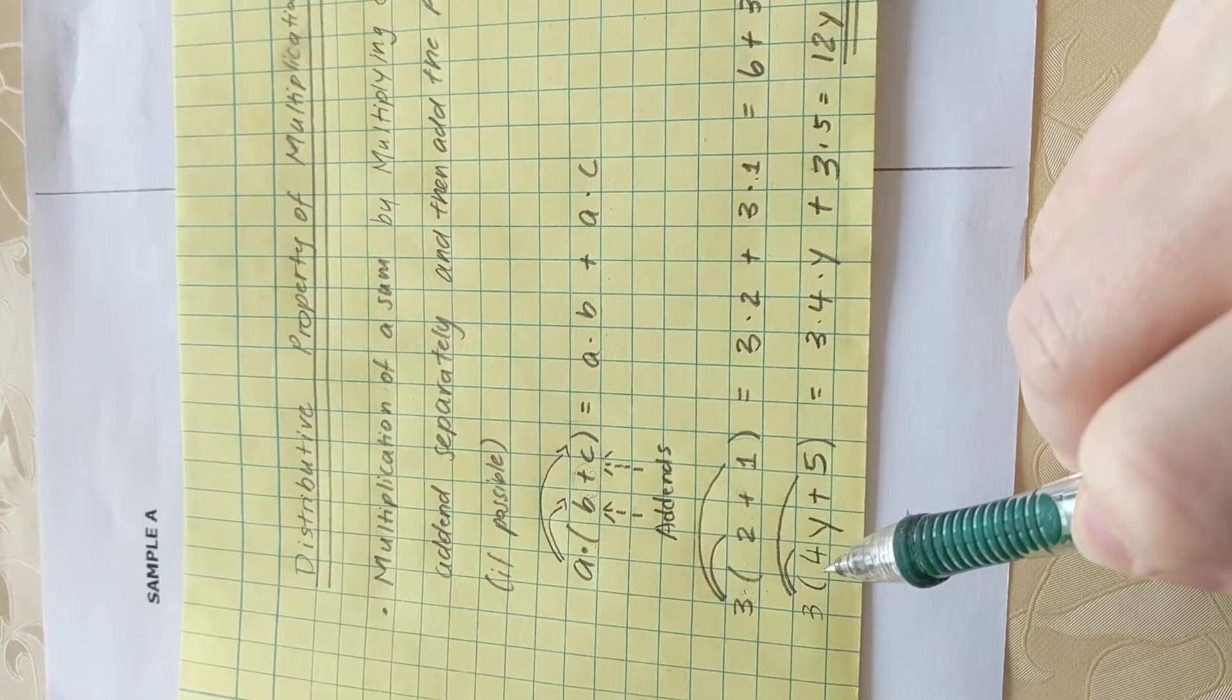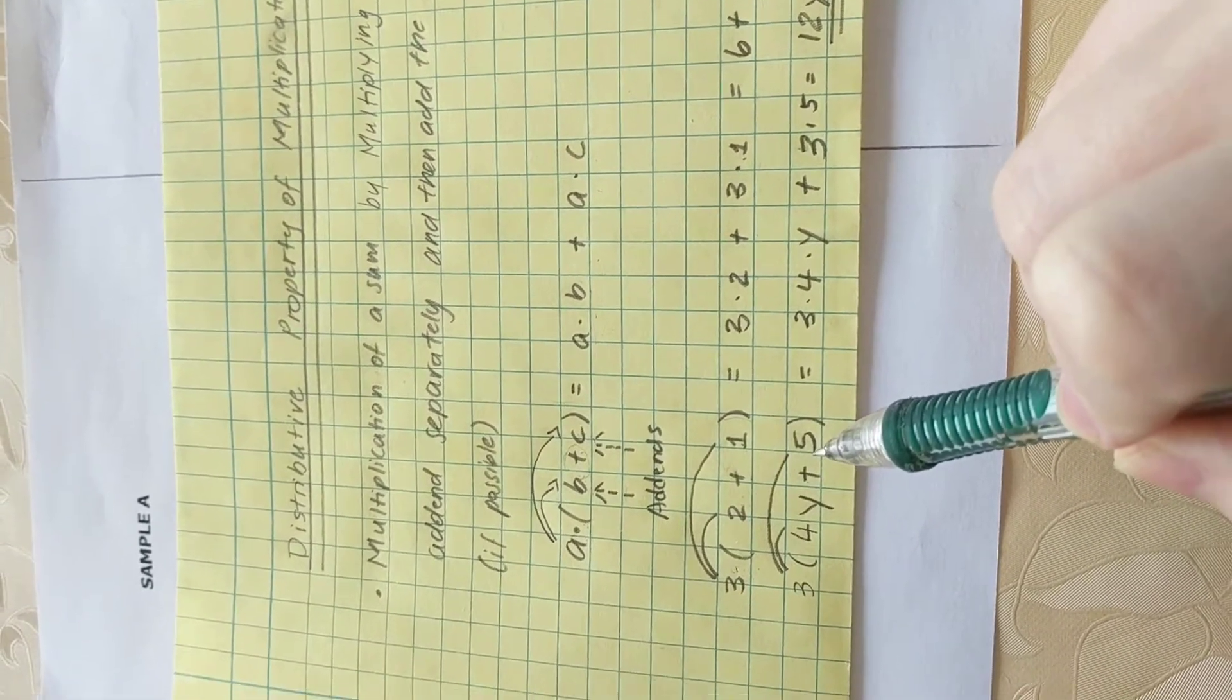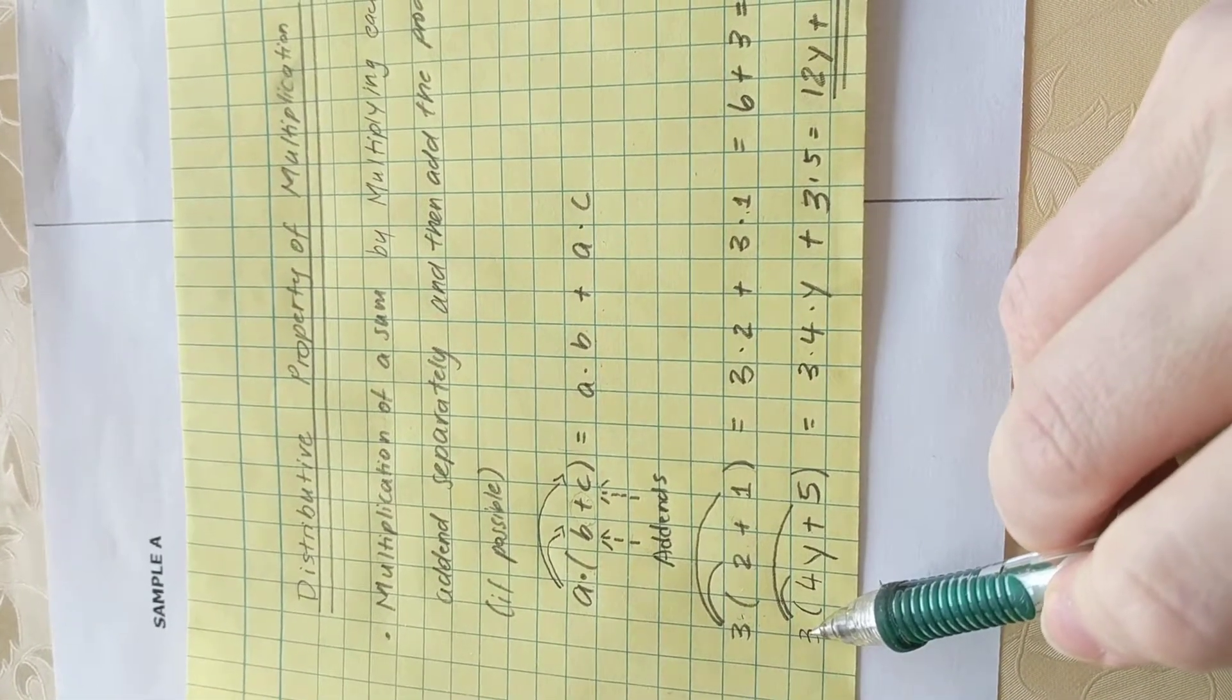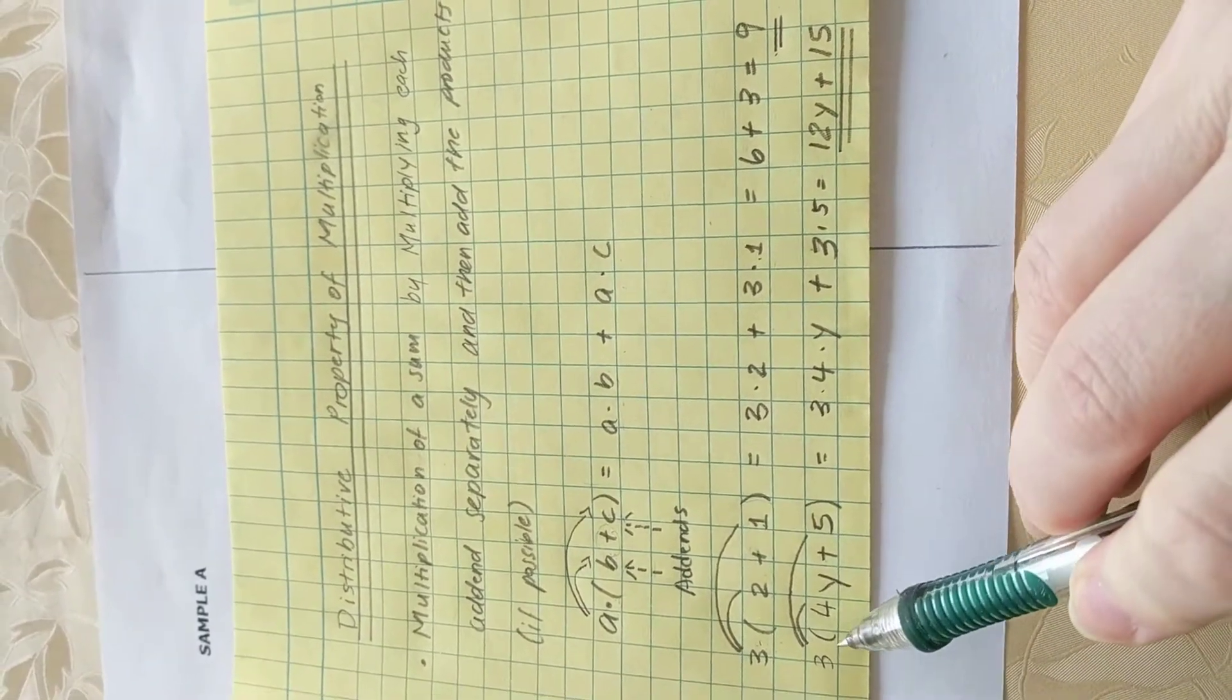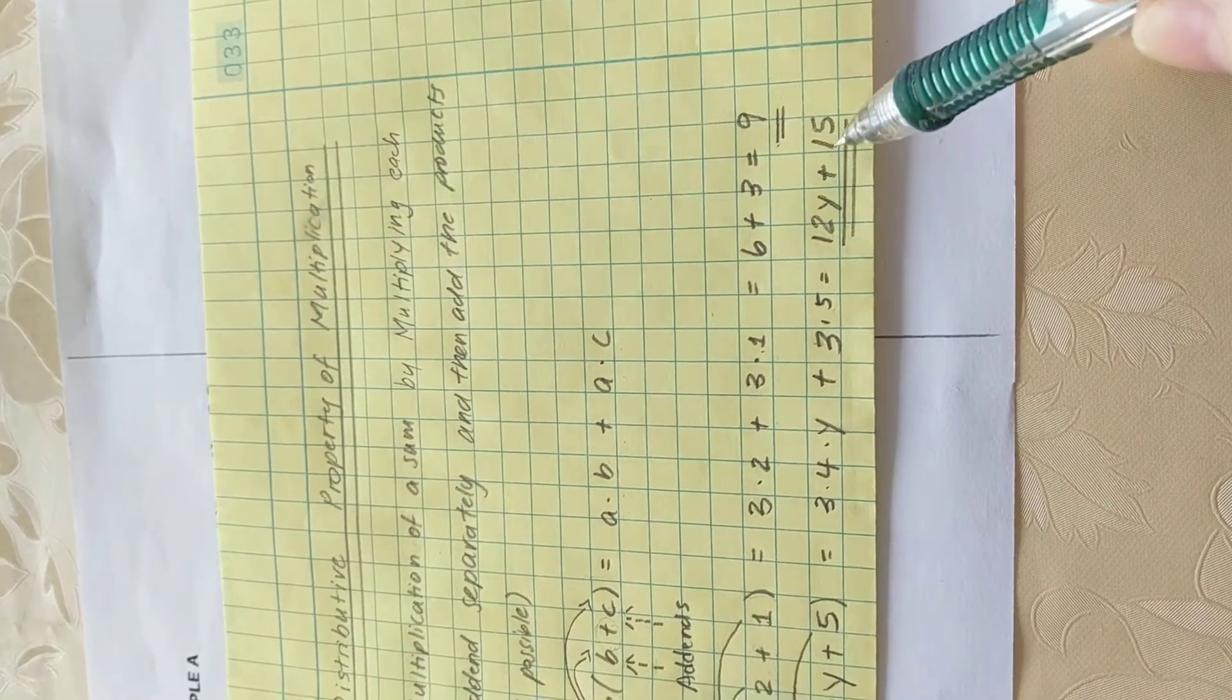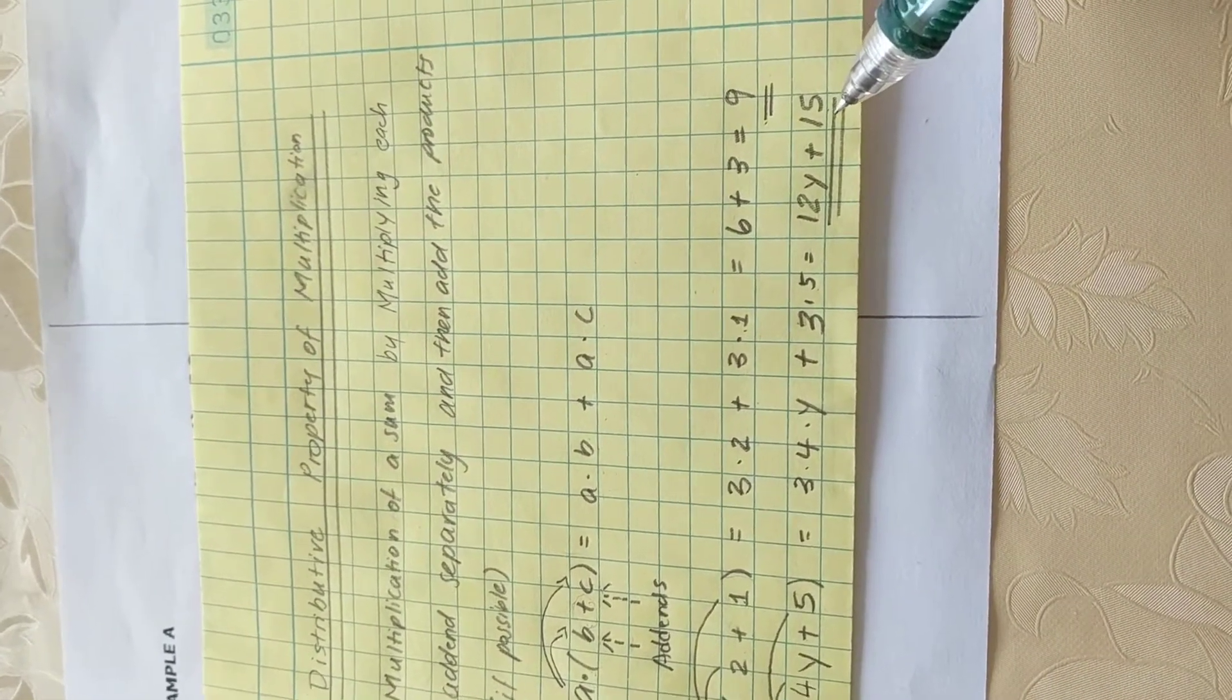Three times open parenthesis four times y plus five close parenthesis. Four y and five are two separate terms. They're unlike terms. That means they cannot be combined. Therefore, when we are using the distributive property of multiplication, we are multiplying three times four y plus three times five. And that will give us three times four is 12 times y plus 15. And this is our final solution because 12y and 15 are unlike terms. They cannot be further combined.